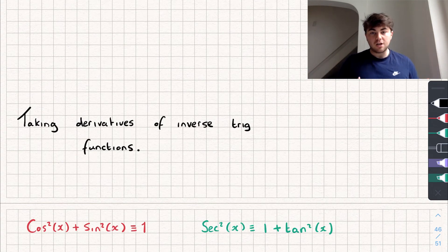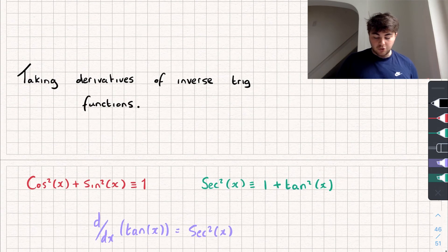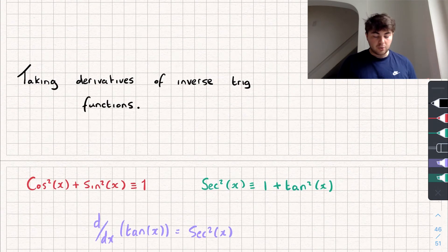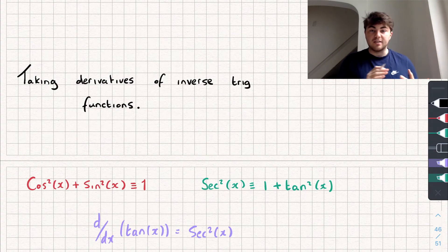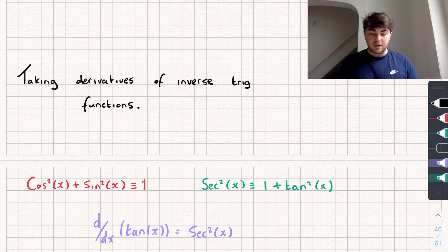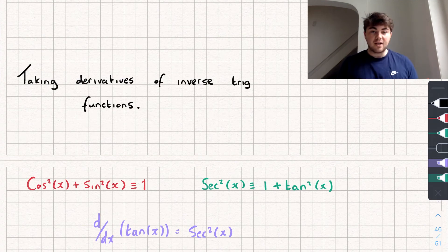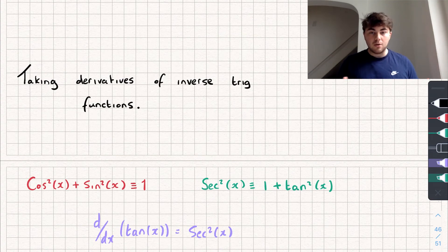Before we start, you're going to need to know how to do implicit differentiation for this video — I'll link my videos on that below. You're also going to need to know a couple of trig identities which I've written here: the first is that cos²x + sin²x = 1, the other is that sec²x = 1 + tan²x. Finally, you'll need to know that the derivative of tan(x) is sec²x. All of this is linked below so if you don't know any of it, you can go check it out.